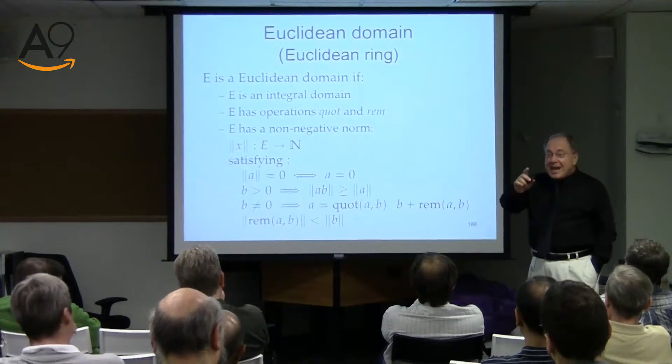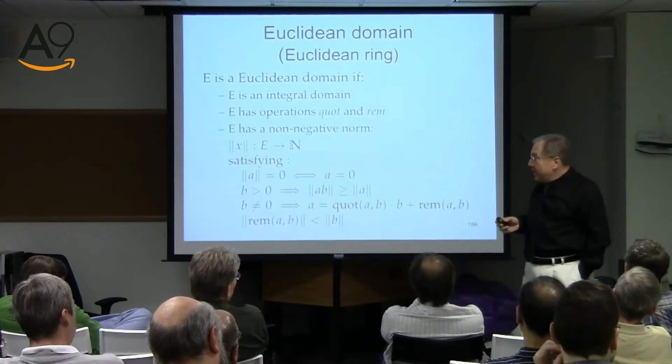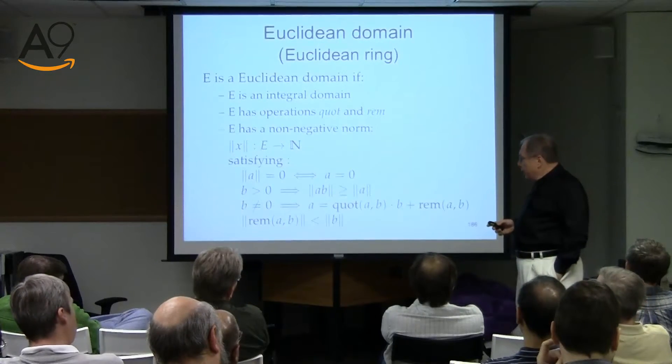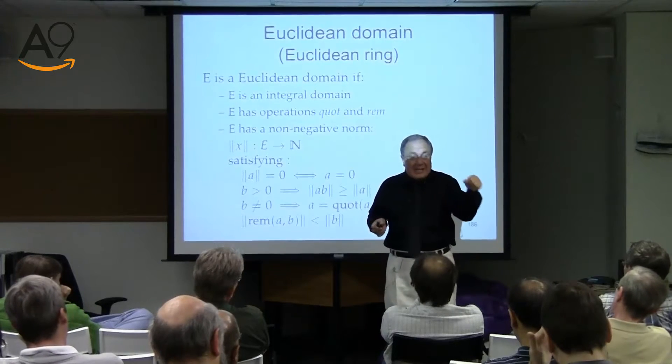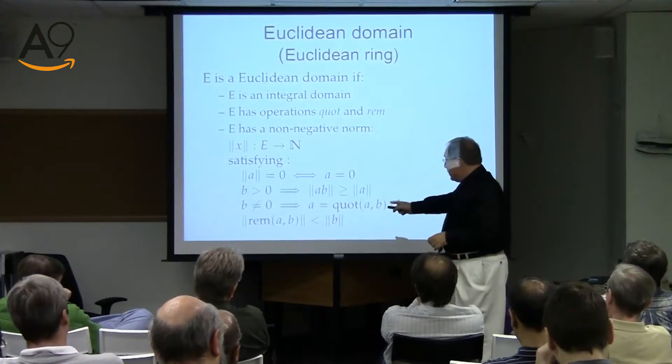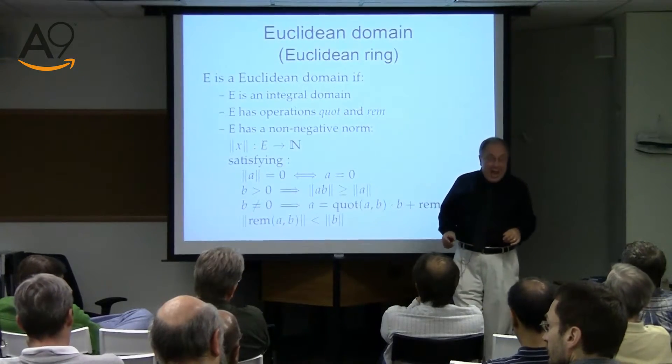For polynomials, the norm is the degree. For Gaussian integers, the norm is the complex norm: for a+bi it's a²+b². In every case, the remainder always has a smaller norm. We introduce this norm to guarantee termination of Euclid's algorithm: at each step the remainder decreases, giving a decreasing sequence of natural numbers, which must be finite — the Greeks knew that, and so should you.